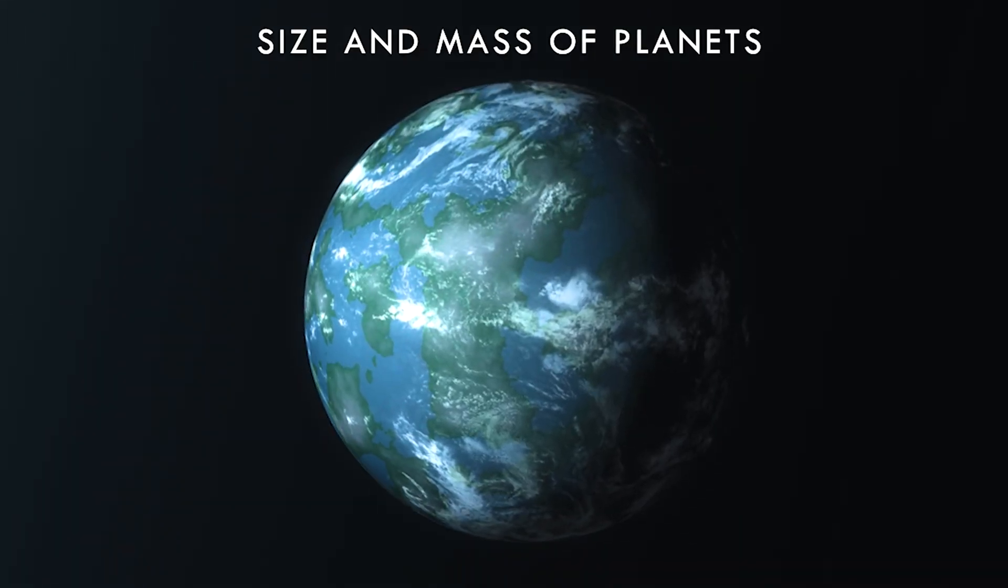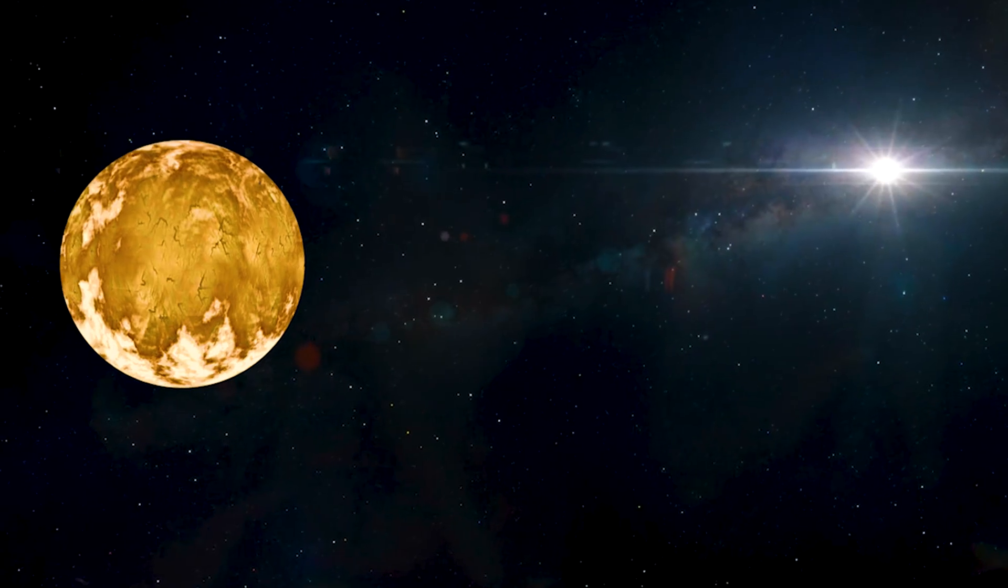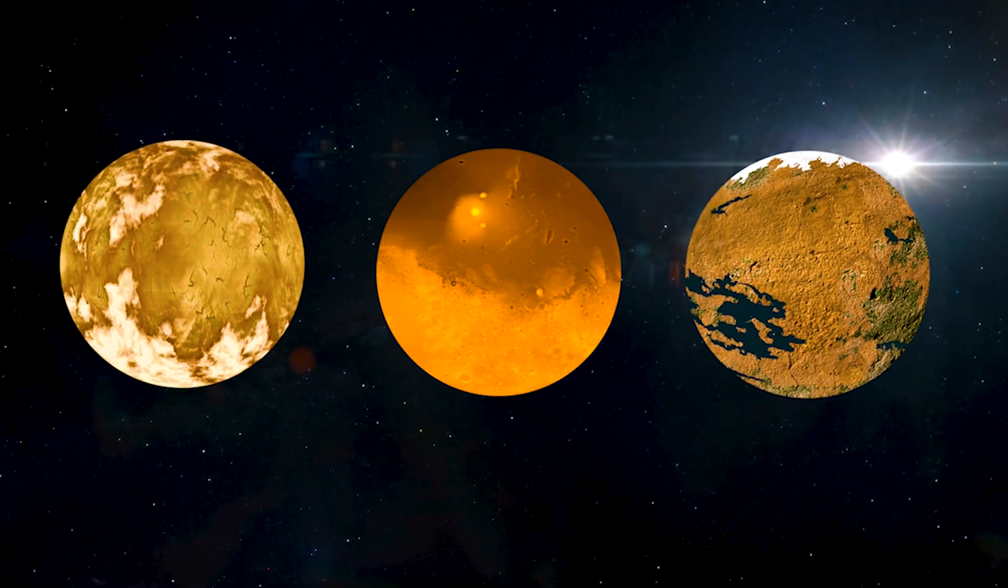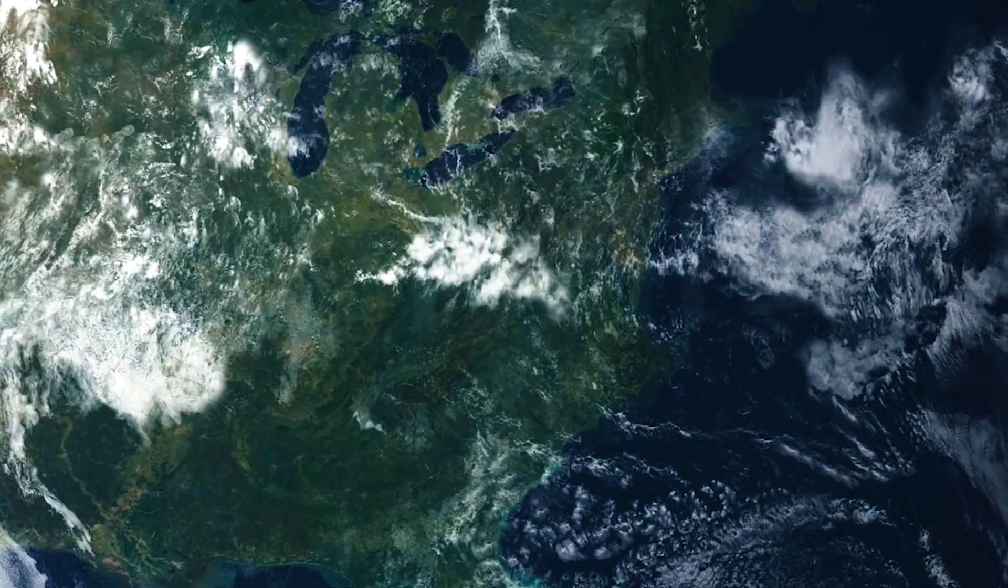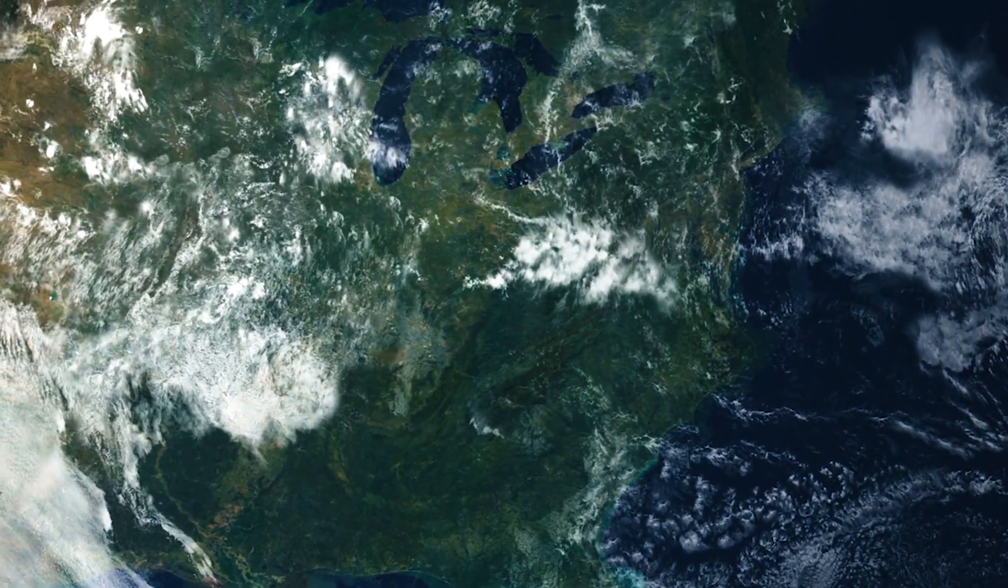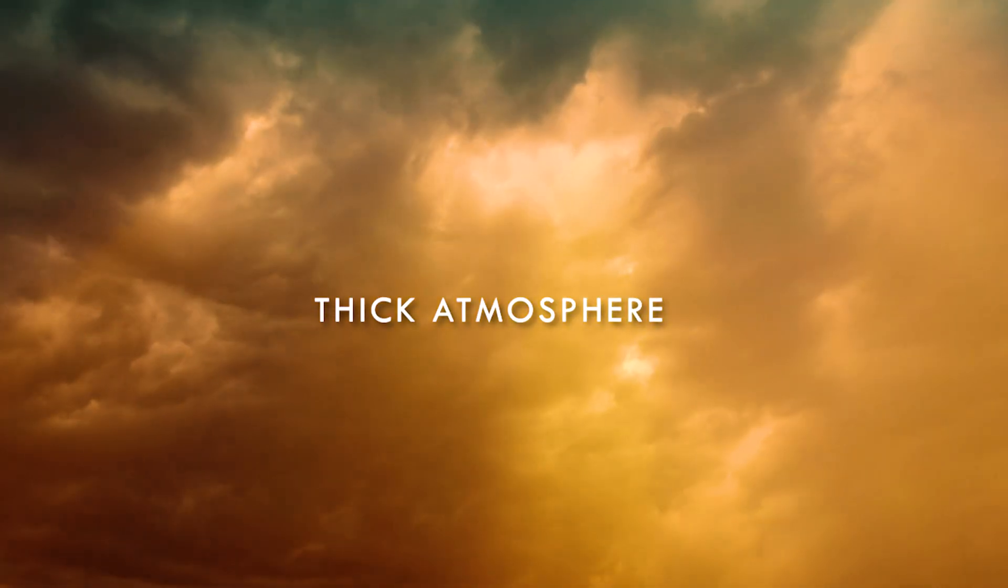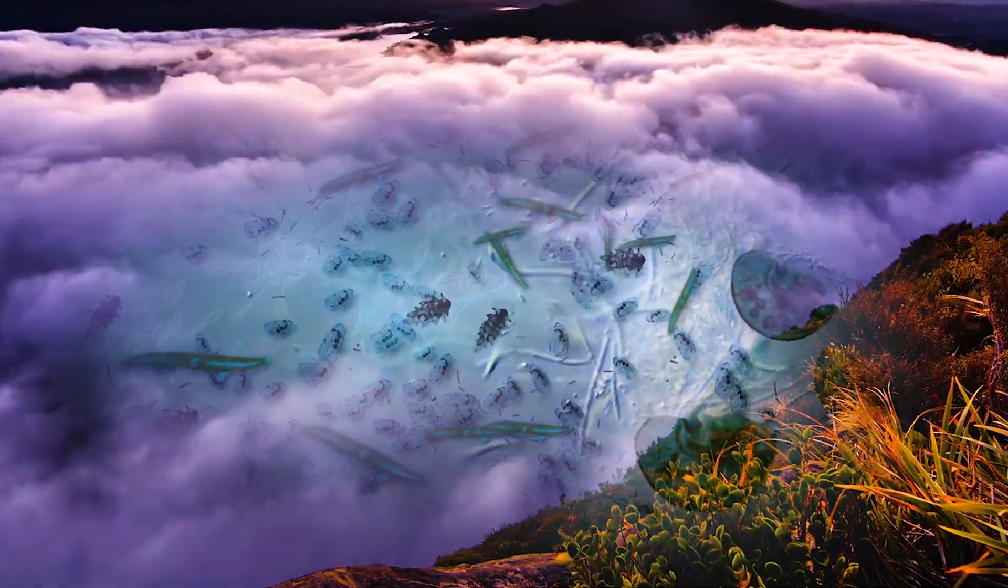Size and mass of planets play a significant role, with scientists searching for planets that are 1.5 to 2 times larger than Earth as they have the perfect amount of gravity. The presence of the ideal amount of gravity results in a thick atmosphere, increasing the probability of the emergence of life.